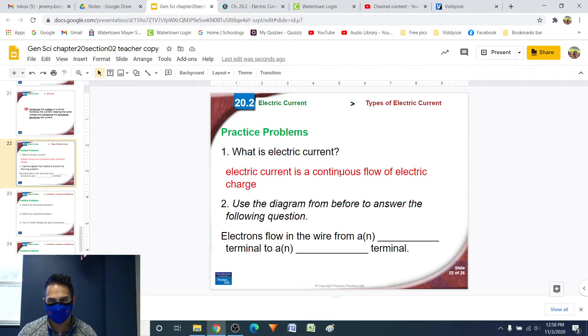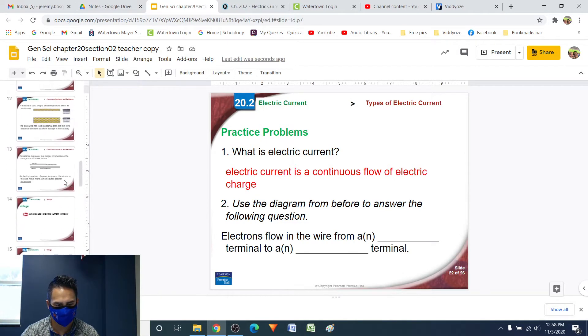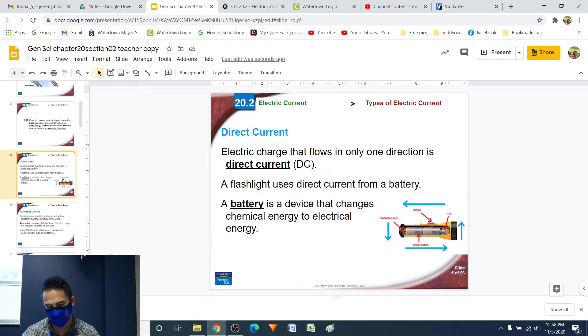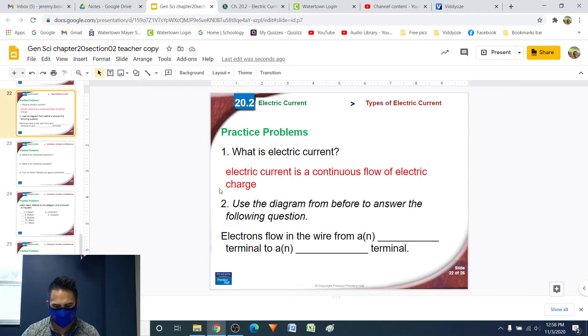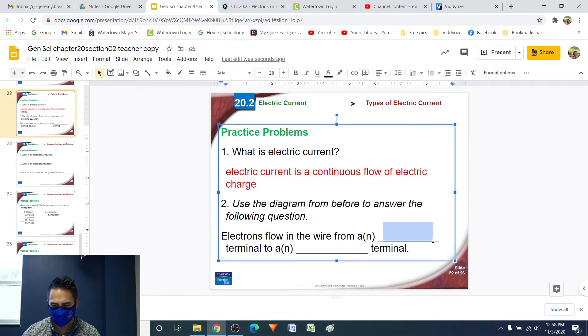Number two, use the diagram from before to answer the following question. Electrons flow in the wire from a blank terminal to a blank terminal. So the diagram I'm pretty sure that they're referring to is the picture of the flashlight with the light bulb and the batteries. So in this diagram, we see that the charges are going from the positive terminal to the negative terminal. So in our answer here, we're going to have that electrons flow in the wire from a positive terminal to a negative terminal.